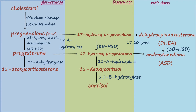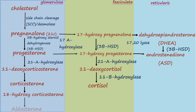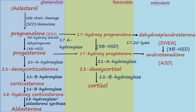For the synthesis of aldosterone, 11-deoxycorticosterone will be converted into corticosterone, then to 18-hydroxy-corticosterone, and finally to aldosterone. The first two reactions are catalyzed by 11-beta-hydroxylase, whereas the last reaction — the conversion of corticosterone to aldosterone — is catalyzed by 18-hydroxylase, also known as aldosterone synthase. The major regulator of aldosterone synthesis is angiotensin II, as it stimulates this enzyme.